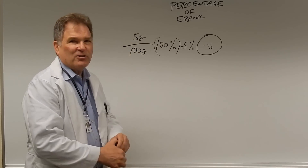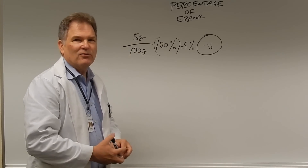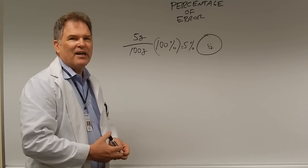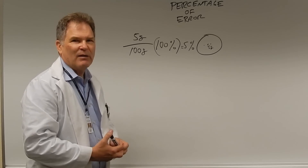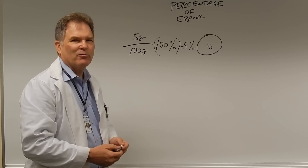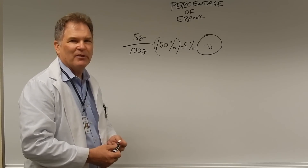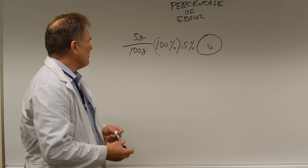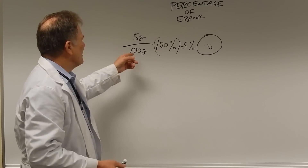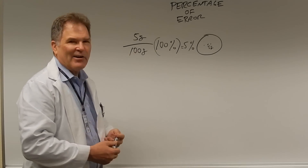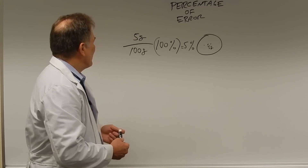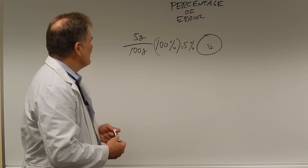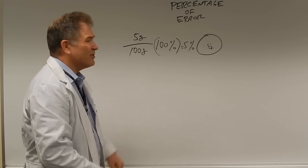So the steps are: first, determine how much you were actually off in grams, milligrams, or milliliters; second, divide by the desired weight; and third, convert it to a percent.